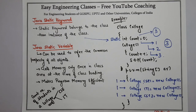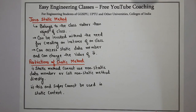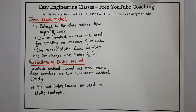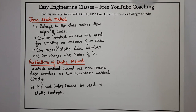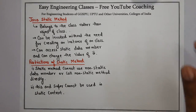Now let's see what is a static method and what are the restrictions of static methods. Just like Java static variable, Java static method also belongs to the class rather than the object of the class. It can be invoked without the need for creating an instance of a class — which means they can be invoked directly without the need of creating objects. And they can access static data members and change the value of those static data members.